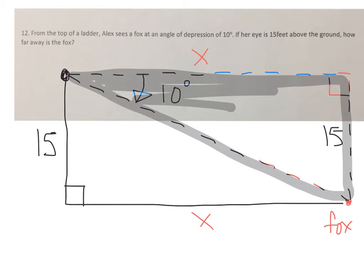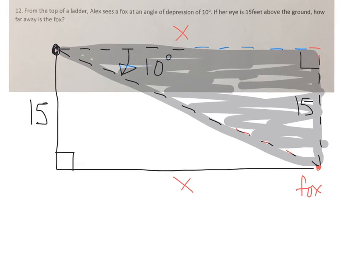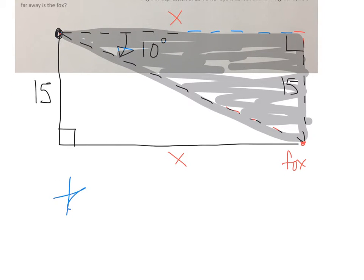So for this triangle at 10 degrees, 15 is the opposite side and x is the adjacent side. So we write tan of 10 equals opposite 15 over x.